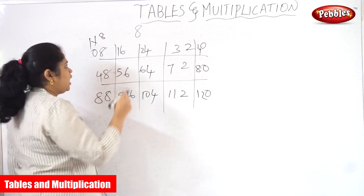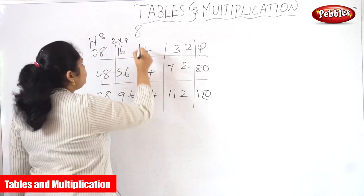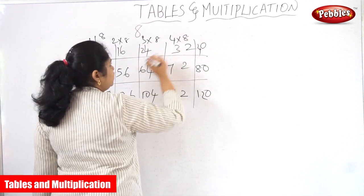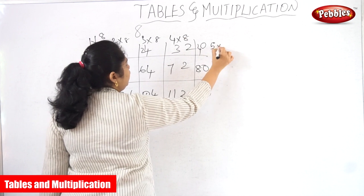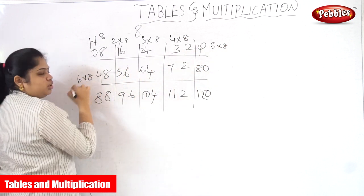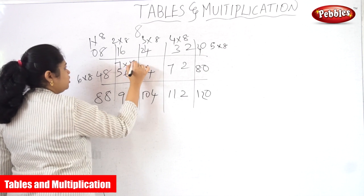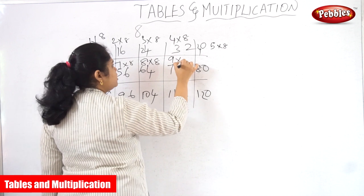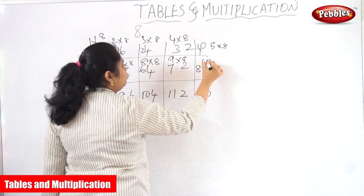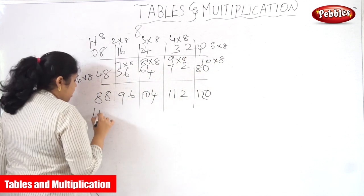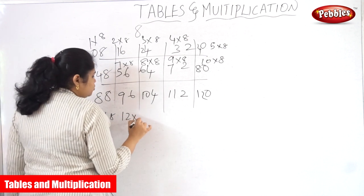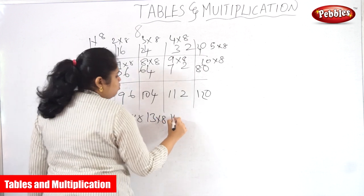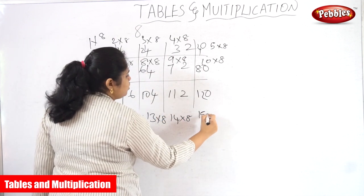1 into 8 is 8, 2 into 8 is 16, 3 into 8 is 24, 4 into 8 is 32, 5 into 8 is 40, 6 into 8 is 48, 7 into 8 is 56, 8 into 8 is 64, 9 into 8 is 72, 10 into 8 is 80, 11 into 8 is 88, 12 into 8 is 96, 13 into 8 is 104, 14 into 8 is 112.